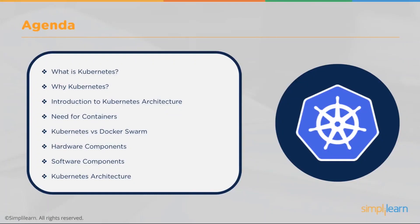We're going to break up the presentation into the following areas. We're going to cover what Kubernetes is and why you want to be using it. We're going to introduce the actual architecture and provide an overview of how it contains the containers and the other components within the architecture. We'll also compare Kubernetes with Docker Swarm. And then we'll look at the hardware and software components, and finally do a deep dive into the architecture and provide a case study of where Kubernetes has been used successfully.